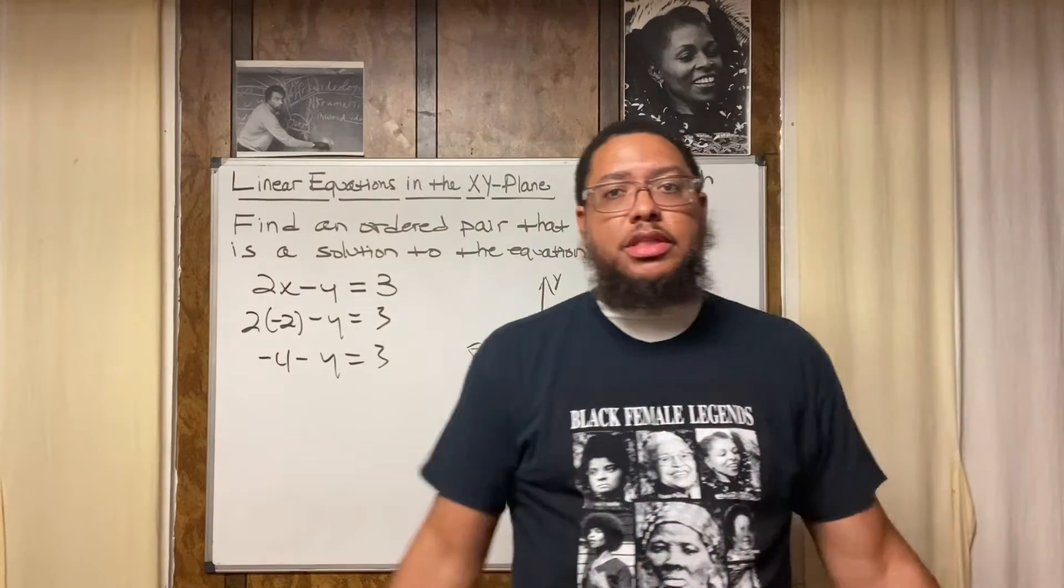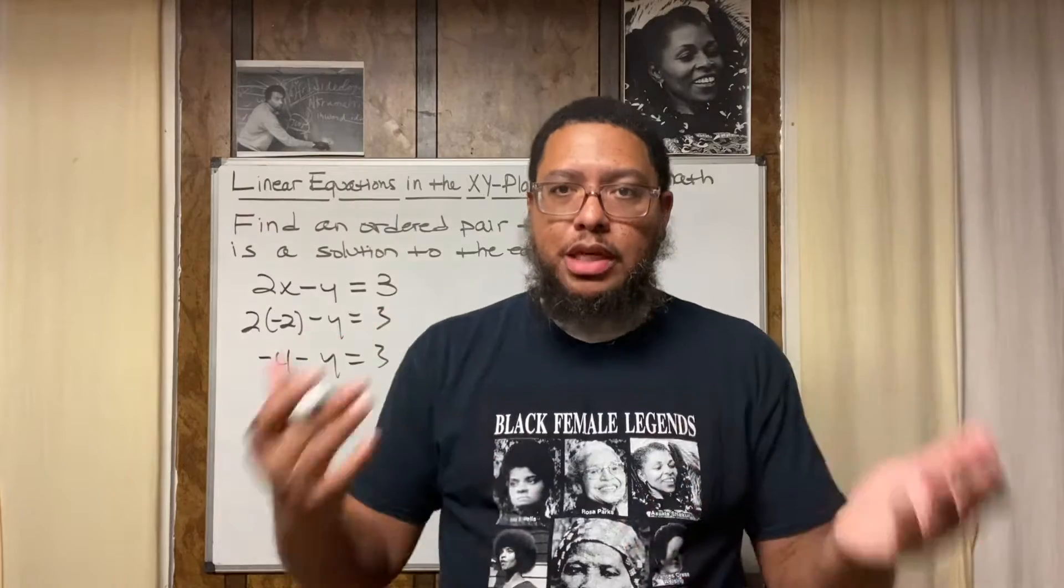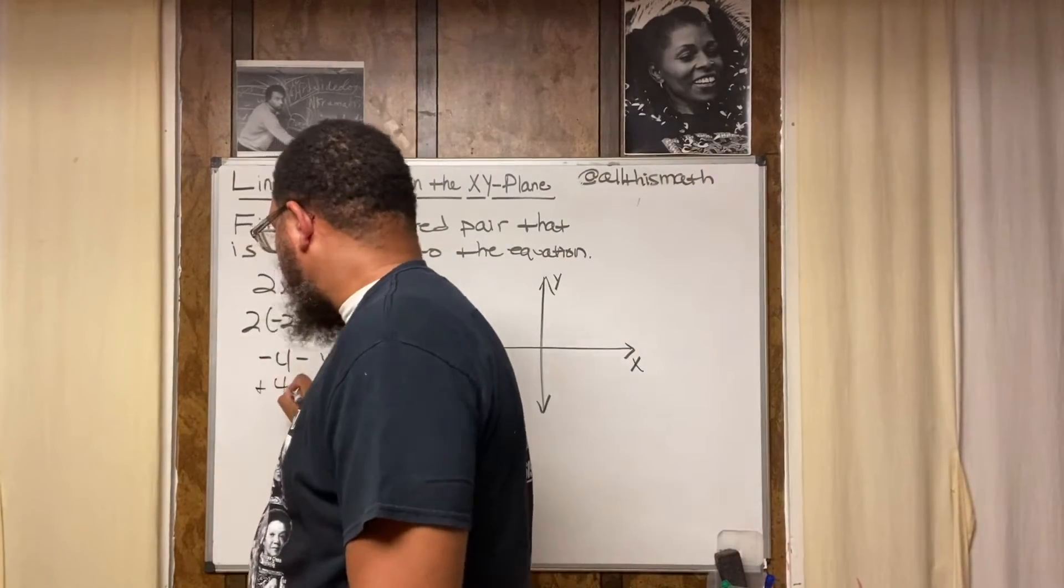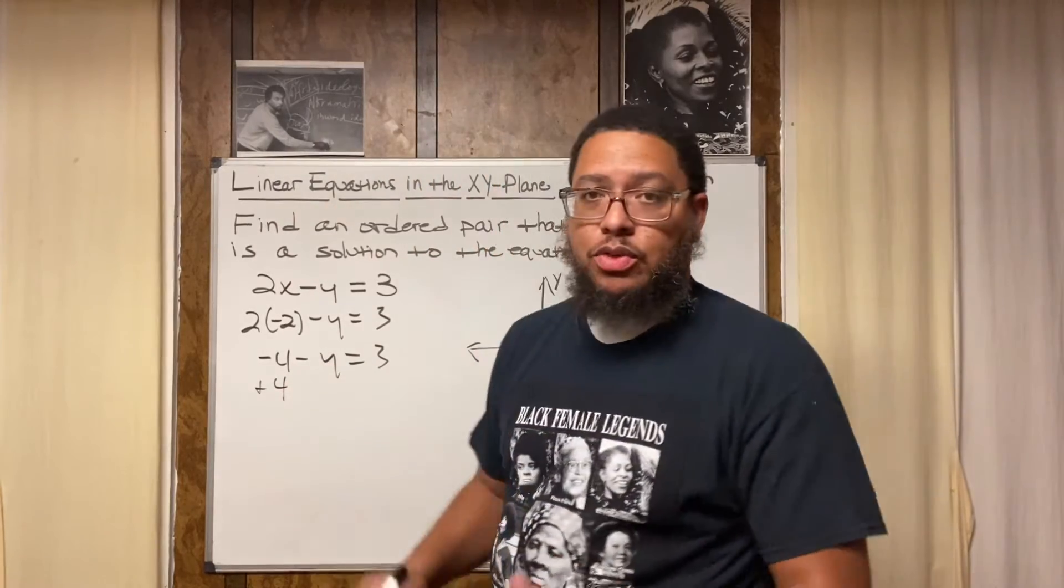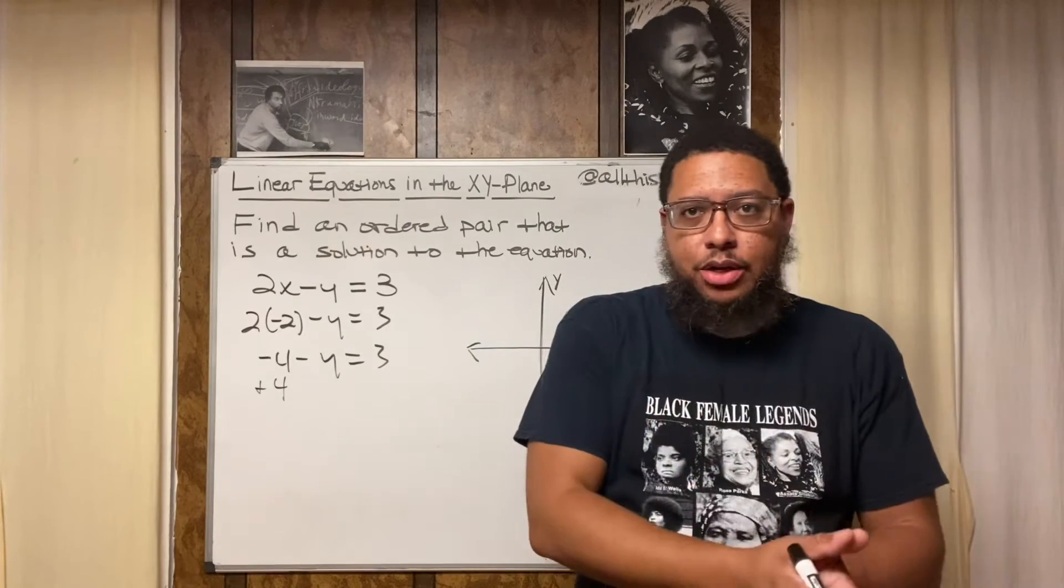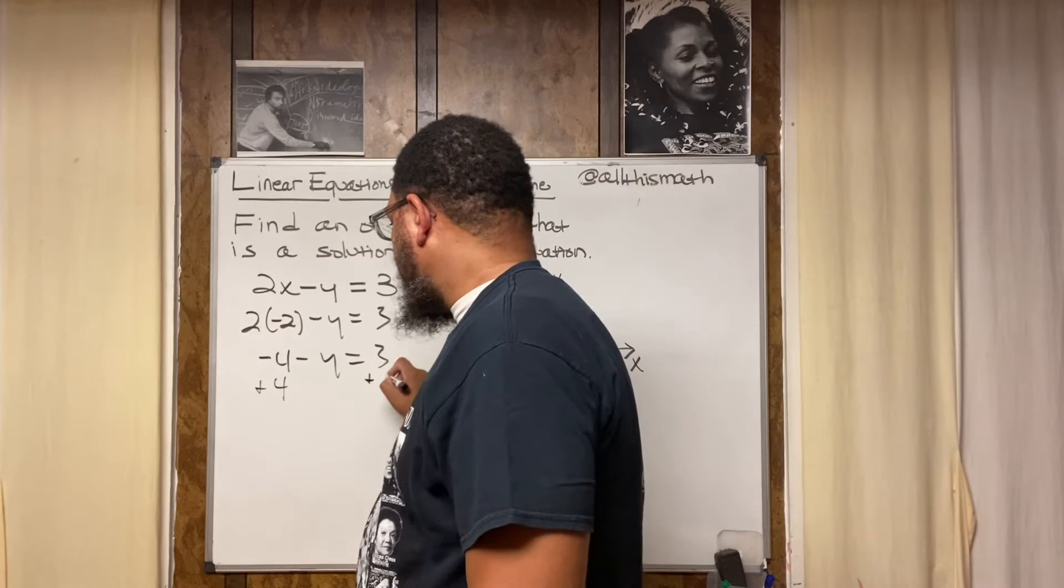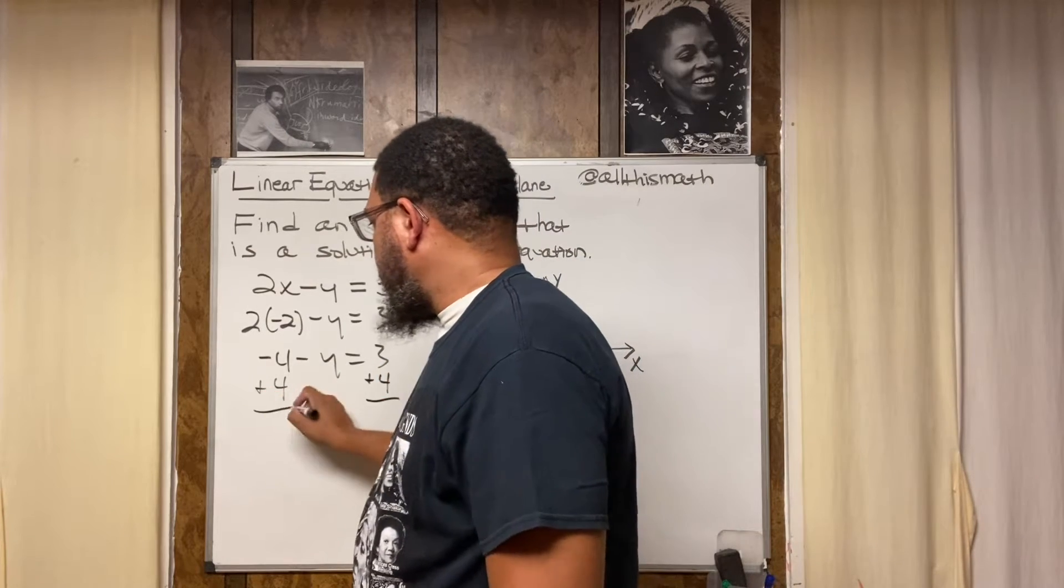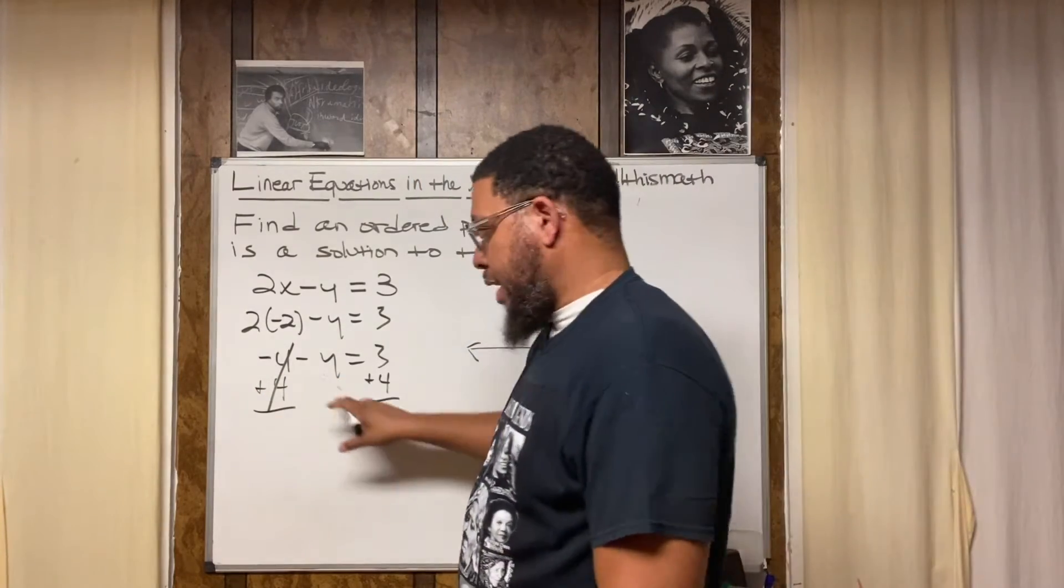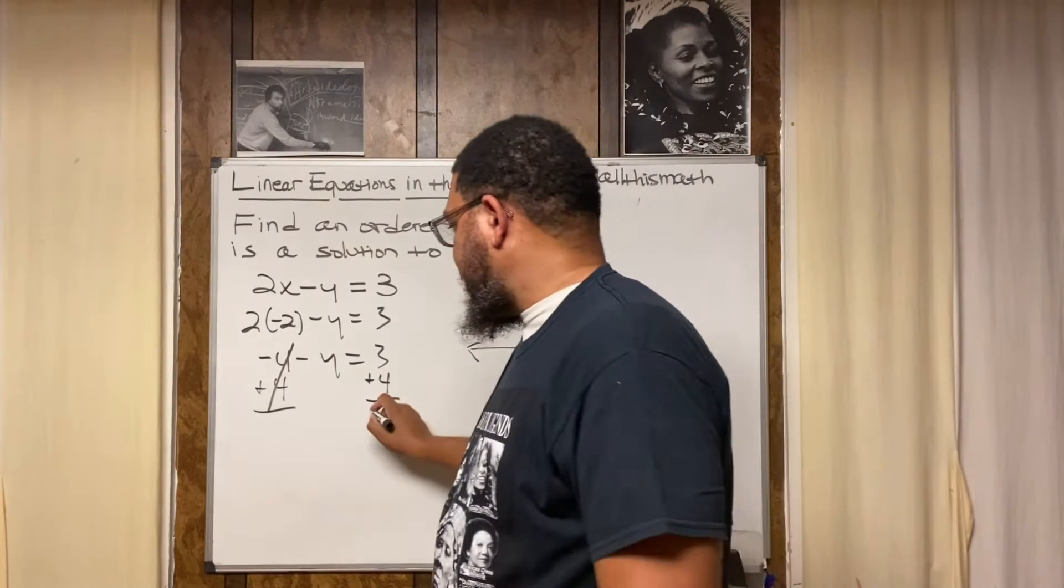To get rid of negative 4, we do the opposite operation. The opposite of negative 4 or minus 4 is plus 4, so we're going to add 4 on the left hand side and also on the right hand side because when we solve equations we want to stay balanced. If I do something on the left side of the equation, I also got to do the same thing on the right side. On the left side that adds up to 0. On the right side I do 3 plus 4, which gives me 7.